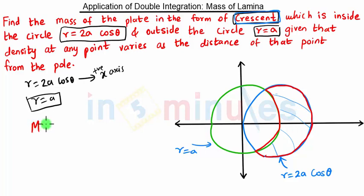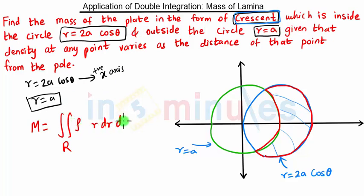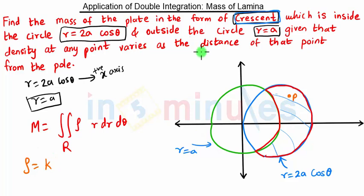The mass will be given by double integration over region R. Since we have polar coordinates, the integrand is rho times r dr d theta. Here rho is density. Density at any point varies as the distance of that point from the pole. For some point p, the density is k times the distance from the pole, where k is some constant. The pole is nothing but the origin, so this distance is r. Therefore density is k times r.